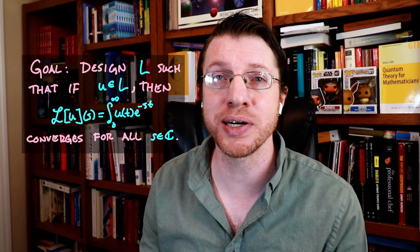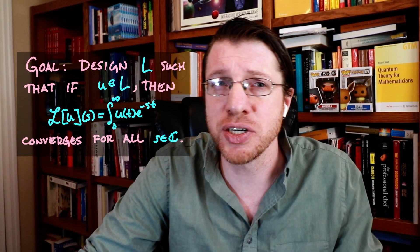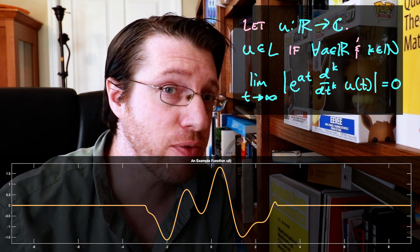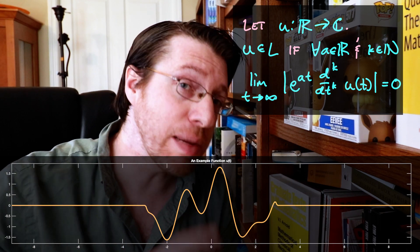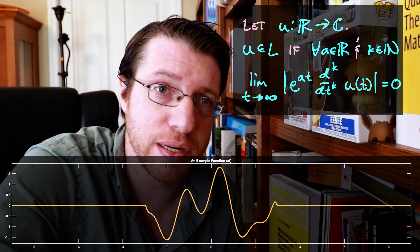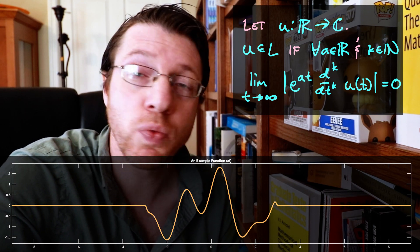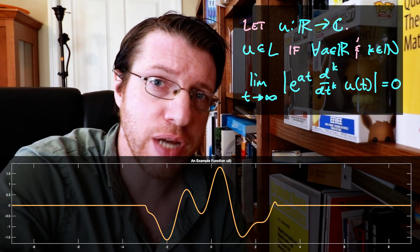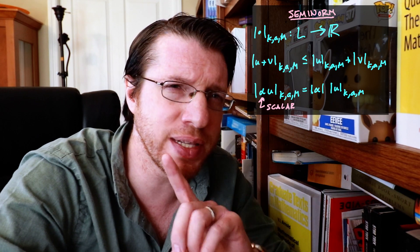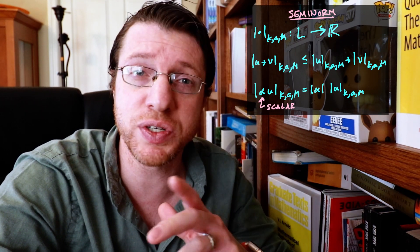Now there are more Laplace transformable functions than these, but our goal is not to define the Laplace transform on these functions, but rather on the continuous functionals of these functions, which includes the delta function. Take a smooth function that maps the reals to the complex plane, such that for every k, t, and a in R, the limit as t goes to infinity of e to the at times the k-th derivative of u of t goes to zero. It turns out that this is a vector space, which we will call L, and this follows since all of those operations are linear. Moreover, we define a topology on this space through a collection of what are called semi-norms, which are individually very close to a norm, with the key difference that they send more than one function to zero.